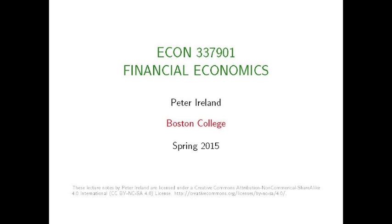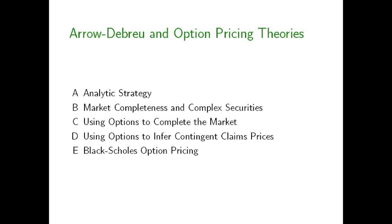In this third and final part of the presentation, we're going to take a look at the Black-Scholes option pricing model or formula. The Black-Scholes option pricing formula rests on an analysis that is very similar to the Arrow-DeBreu analysis worked through in parts one and two, wherein we go from the prices of complex assets like stocks and bonds to contingent claims prices, and then from contingent claim prices to the pricing of other complex securities.